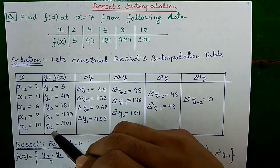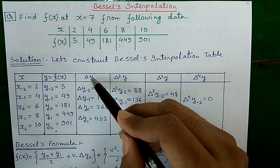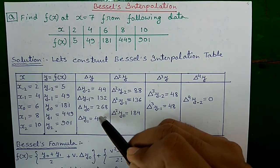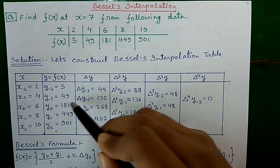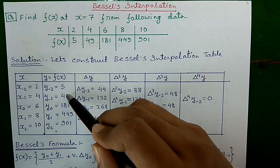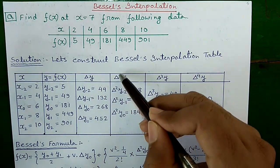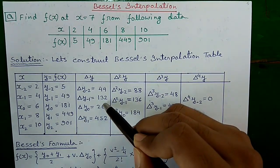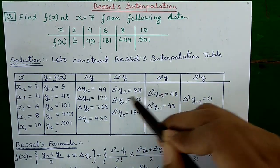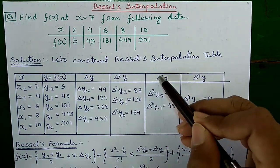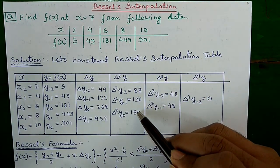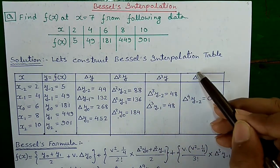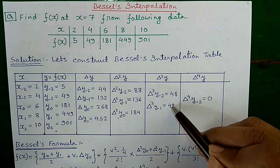Next, to find Δy, starting from the bottom, subtract each value from the one above it to fill the column. Similarly, to find Δ²y, starting from the bottom, compute differences of the Δy column. Then to find Δ³y, compute differences of the Δ²y column.